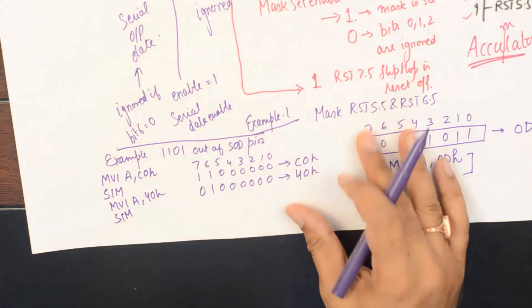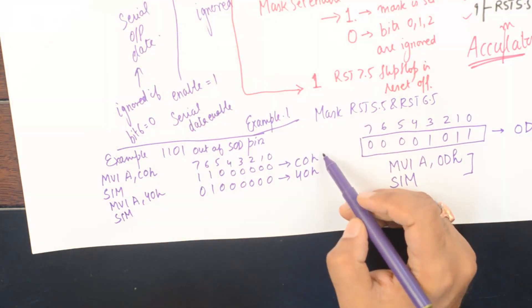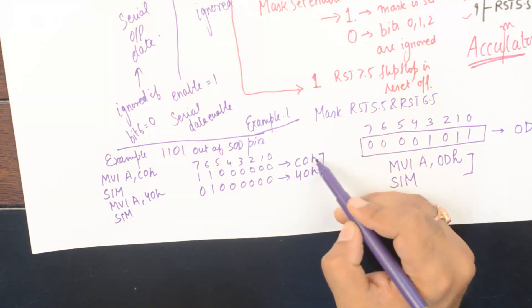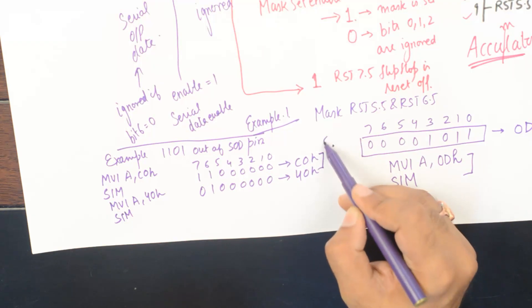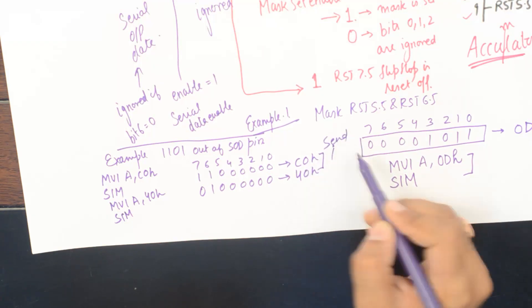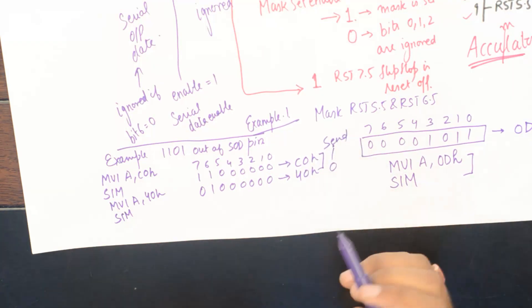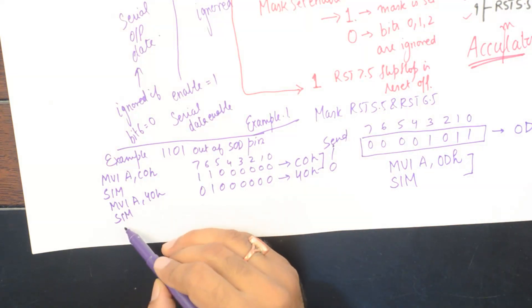In other words, you can keep a ready reckoner that to send 1 the code is C0, to send 0 the code is 40 and you could repeat it again.